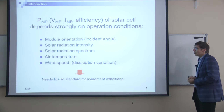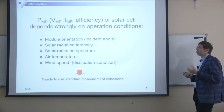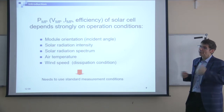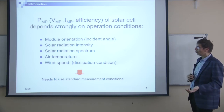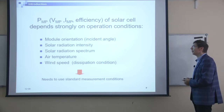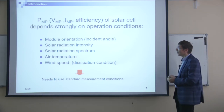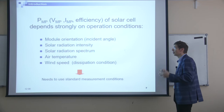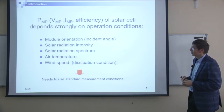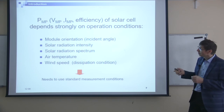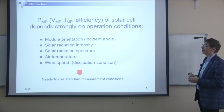The problem is that the power generated by the module or solar cell depends on many factors. First, it's the orientation of the module — if you change orientation, you change the output. The power depends on the intensity, and sometimes even efficiency can depend on intensity. To get the real efficiency, you have to specify conditions, and one of the most important problems is that it depends on the solar radiation spectrum.